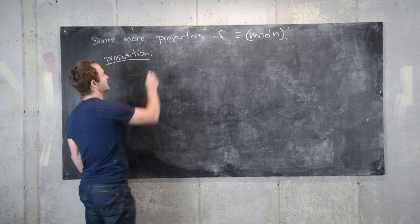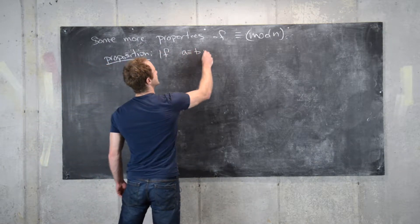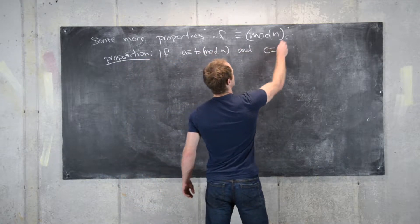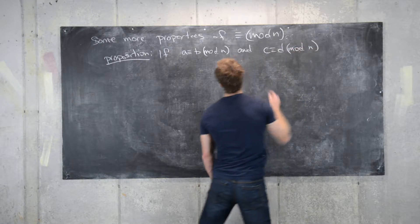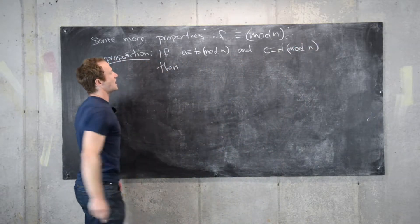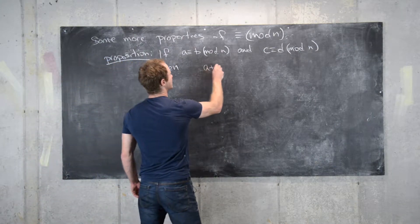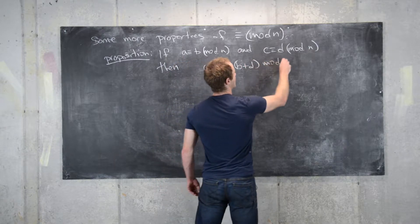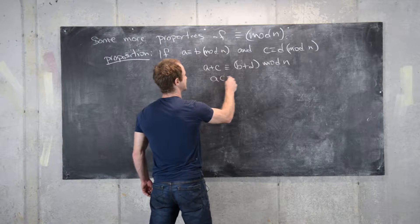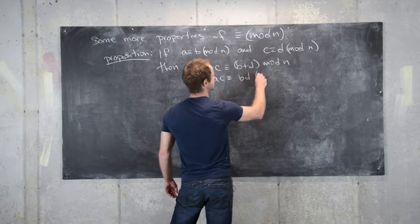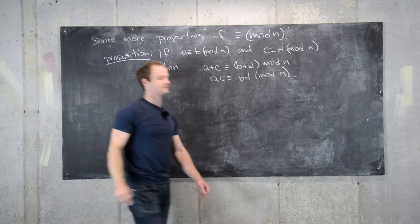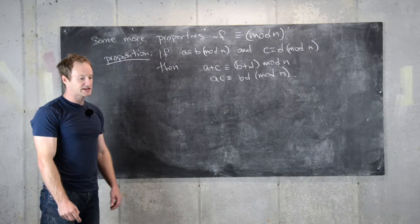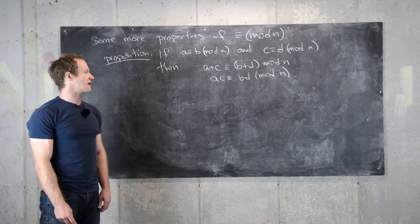If a is congruent to b mod n and c is congruent to d mod n, then the following two things are true: a plus c is congruent to b plus d mod n, and a times c is congruent to b times d mod n. In other words, this notion of congruence mod n is compatible with normal arithmetic of integers.